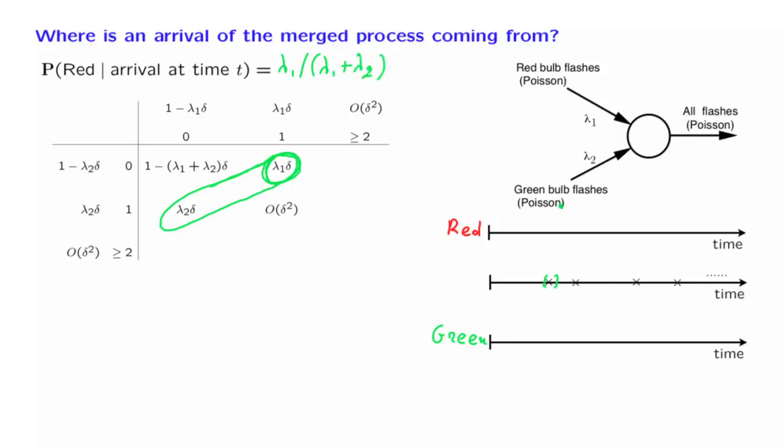Does this answer make sense? Well, suppose that lambda 1 and lambda 2 were equal. In that case, by symmetry, when an arrival comes, it should be equally likely to have come either from the red or from the green stream. And this is consistent with this answer.